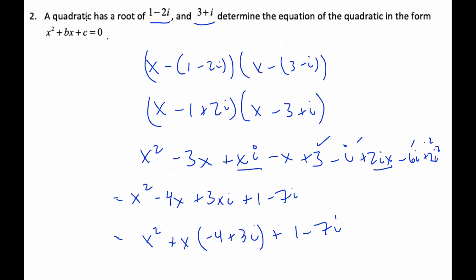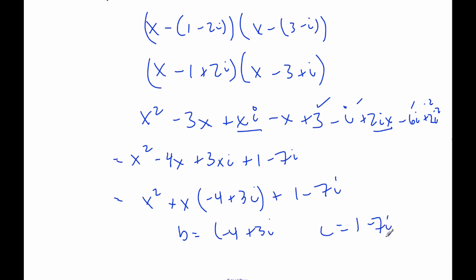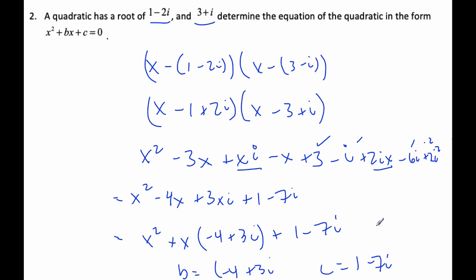And then plus (1 minus 7i). And so from here, I know my b would be (minus 4 plus 3i), and my c from here would be (1 minus 7i), and that is our quadratic.